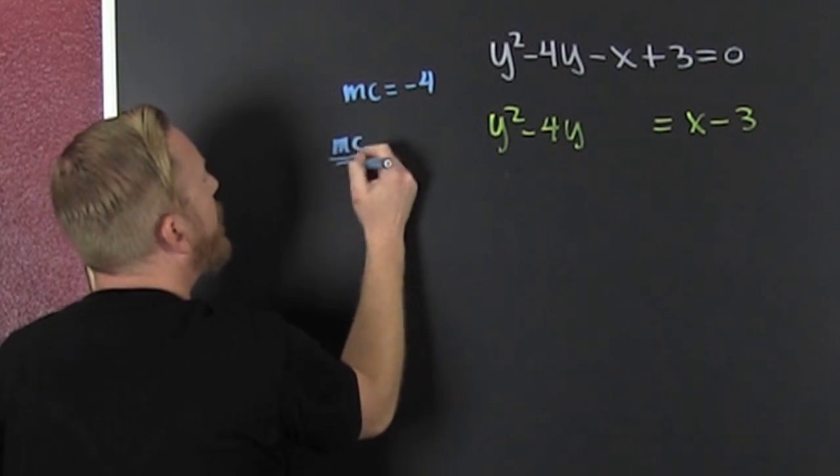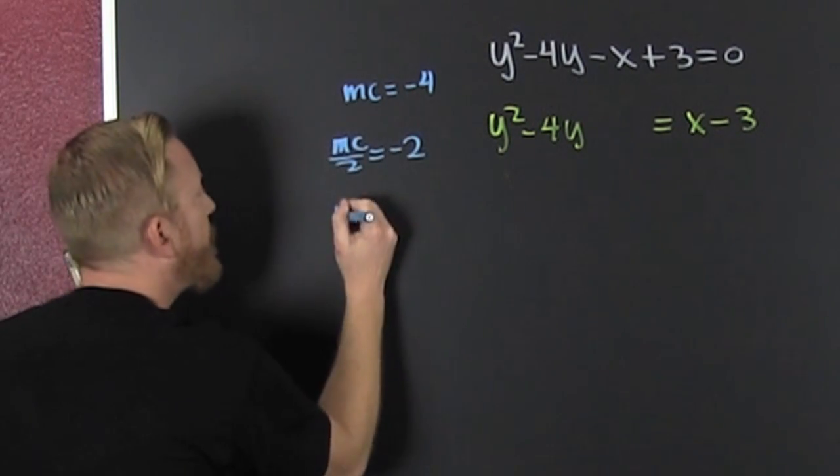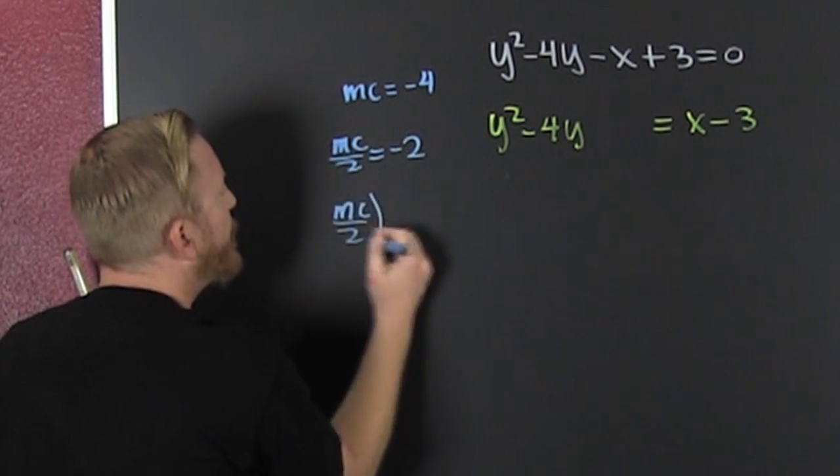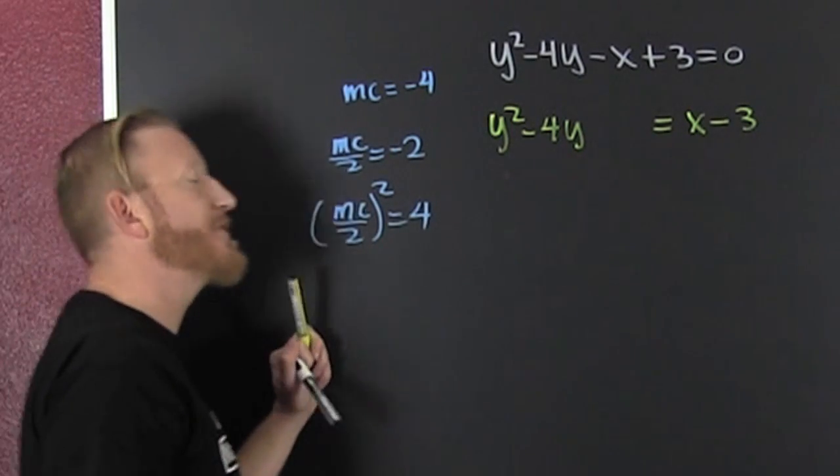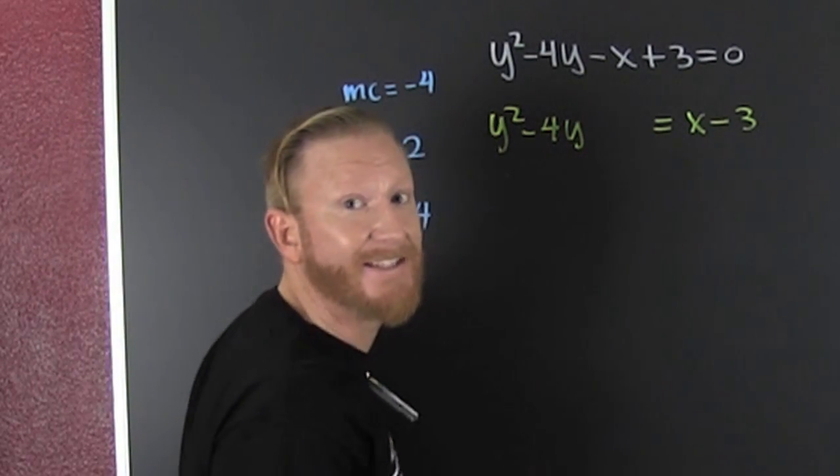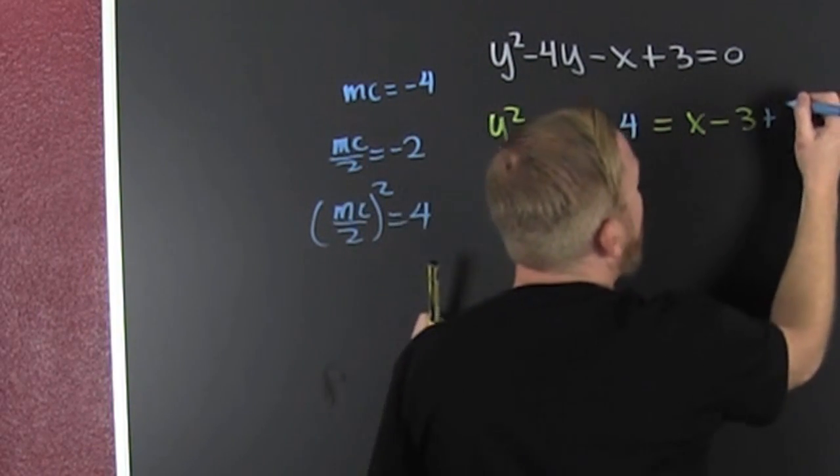The middle coefficient over 2, that's a minus 2. And then the middle coefficient over 2 squared is 4. Because I take half the middle coefficient squared and I add it to both sides. So I add it to this side and I add it to that side.